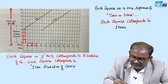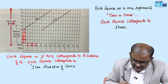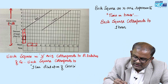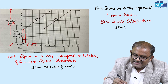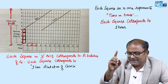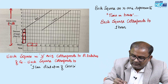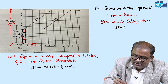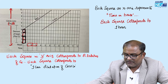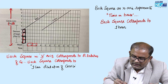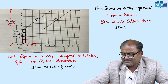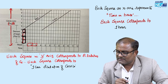Each square on the Y-axis corresponds to dilatation of the cervix. One square represents one centimeter dilatation of the cervix. Two squares on the X-axis represent one hour. That is the key point.